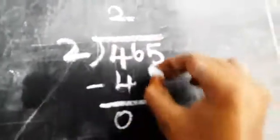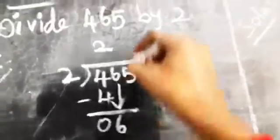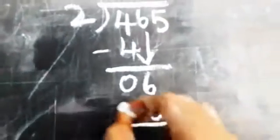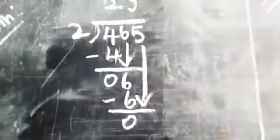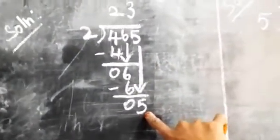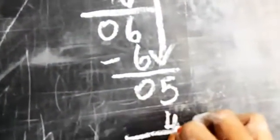4 minus 4 is 0. Bring down the tens digit: 6. How many 2s are 6? Yes, 3 twos are 6, so write 3 in the quotient. 3 twos are 6, then subtract: 6 minus 6 is 0. Bring down the ones place: 5. How many 2s are 5? Only 2 twos are 4, so write 2 in the quotient. 2 twos are 4, subtract: 5 minus 4 is 1. Therefore, quotient is 232 and remainder is 1.